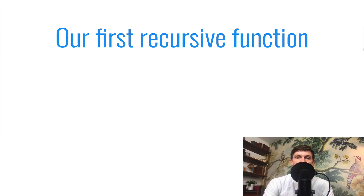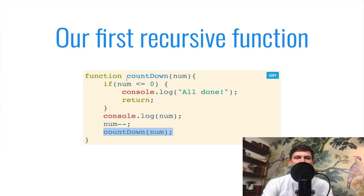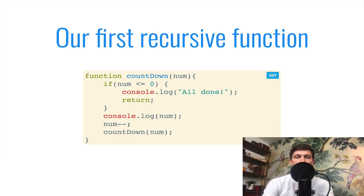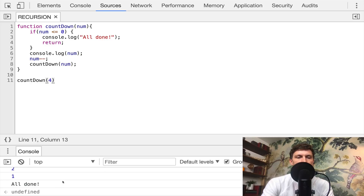Let's take a look at our first recursive function — a very simple one called countdown. All it does is print out numbers. You pass in a number like four, and it counts down: four, three, two, one, then prints 'all done' at the end. The first thing to highlight is the recursive call — it's called 'countdown,' and we're calling countdown inside itself. Second, we have a base case that checks if we've hit the end of our countdown — we console.log 'all done' and then return. I'll explain why that return is so important. If I execute this, we get four, three, two, one, all done.